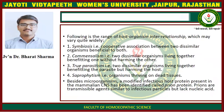Besides microorganisms, a modified infectious host protein present in the mammalian central nervous system has been identified, called prion protein. Prions are transmissible agents similar to infectious particles but lack nucleic acid.